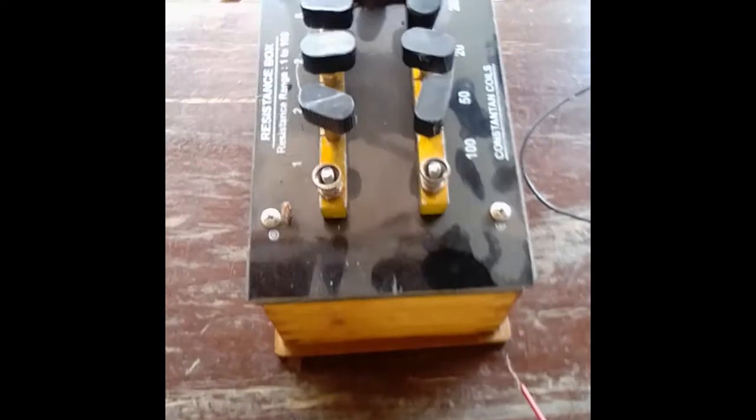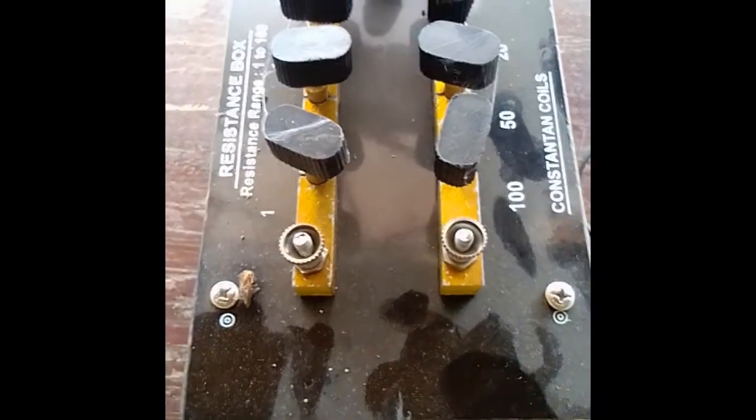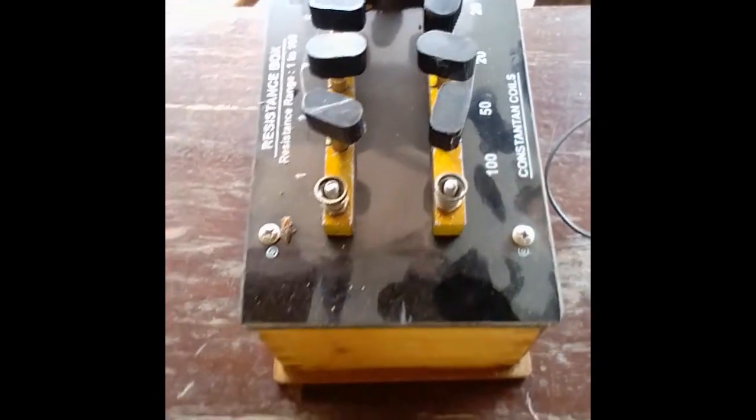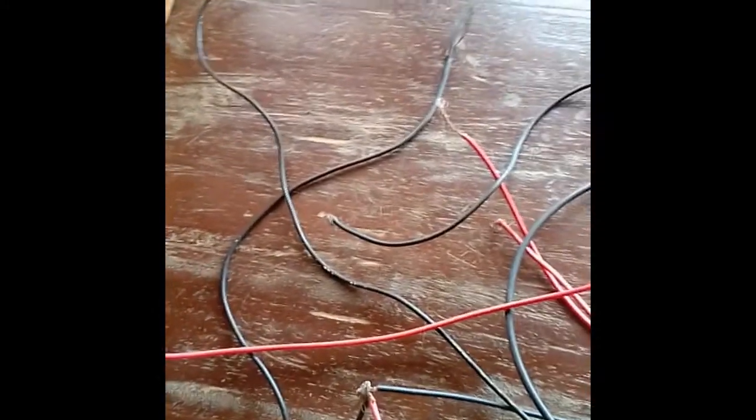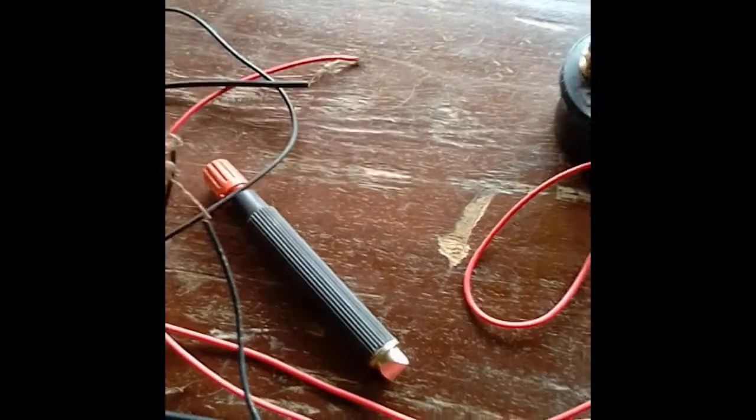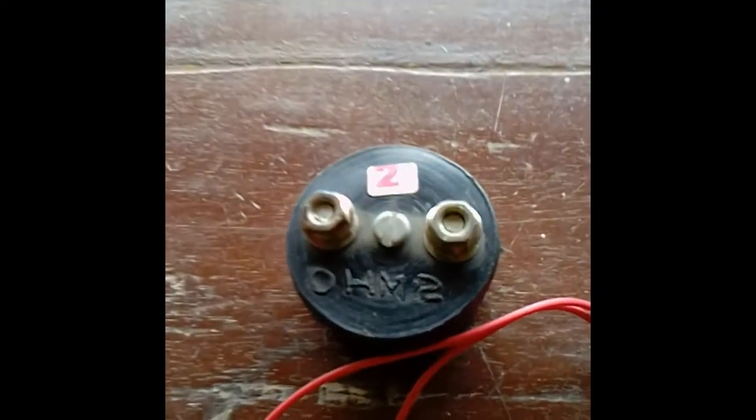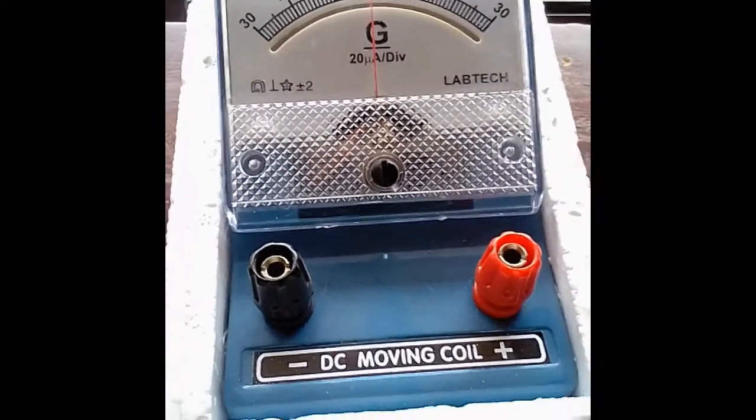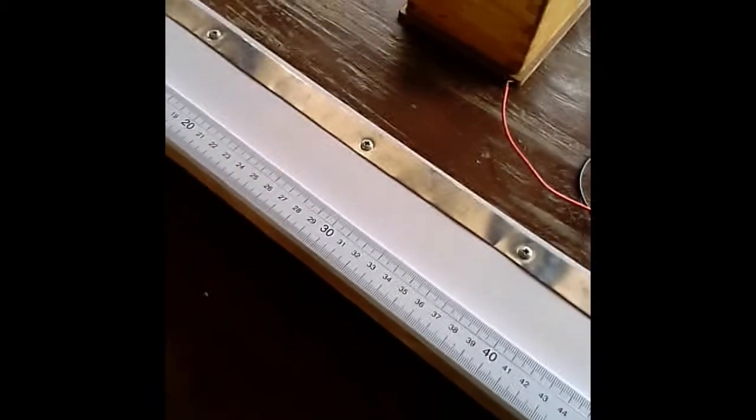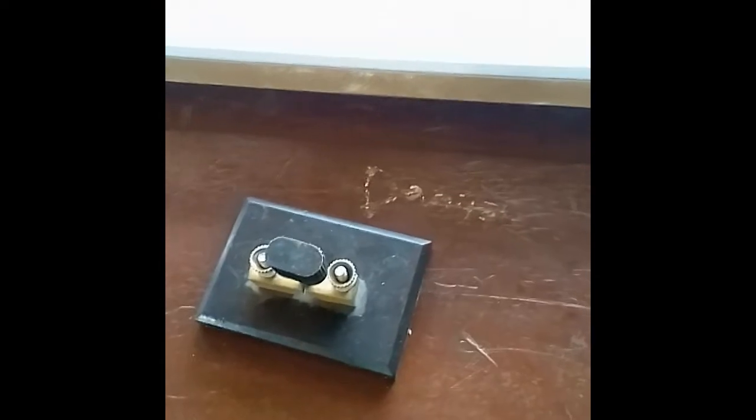You can proceed from there to our apparatus. This is the resistance box, the connecting wires, the jokey itself, the resistor, a two ohms resistor, the galvanometer, the meter bridge, cell and key.